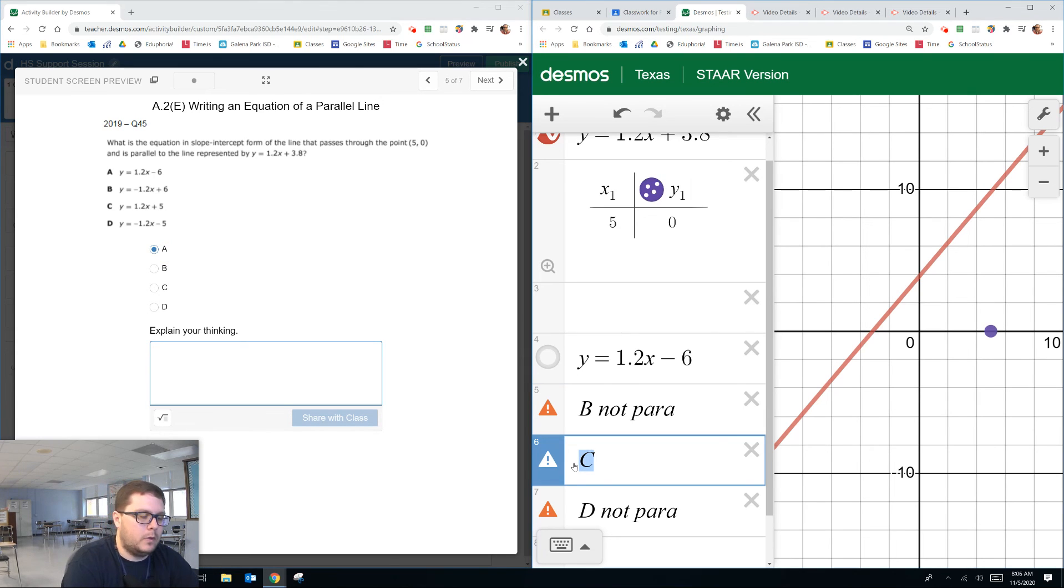But let's go ahead and check C anyways. Y equals 1.2X plus 5. It's parallel like we knew it should have been, but it does not go through the point. And again, we're only looking at these one at a time. All right. So we feel pretty confident A is the answer.